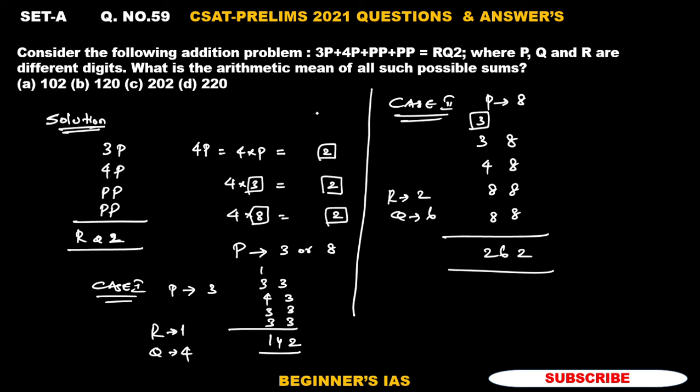do not want that. We need to identify the arithmetic mean of all the possible sums. What is the arithmetic mean? Sum of the 2 resultants: that is 142 plus 262 by 2. That is going to be the answer, which is nothing but 404 by 2. Just by cancelling or getting 202, the answer for this question is option C, 202. Thank you all, have a good day.